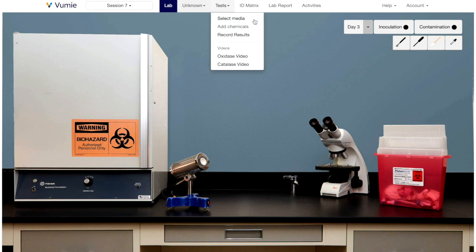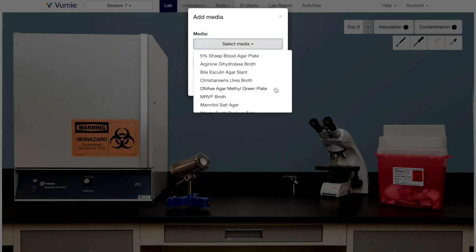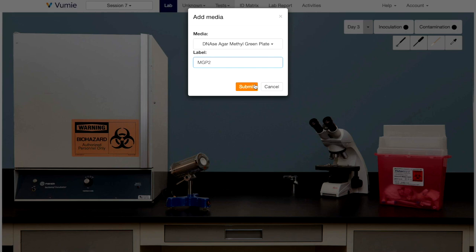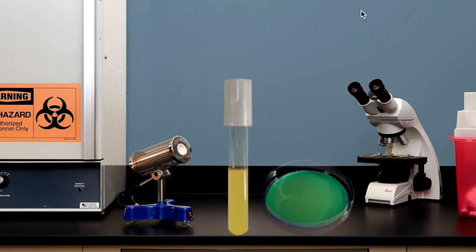First, select the medium to be inoculated. It will appear along with a pure culture of inoculum on the lab bench. Inoculum at left and sterile agar plate at right.